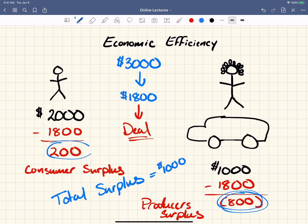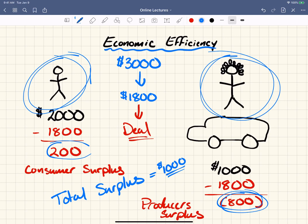The economy is $1,000 better, more or less, because both parties of the transaction got a better deal than what they would have absolutely done at the highest price that they would have bought for or the lowest price she would have sold for. And this is the idea of economic efficiency and producer and consumer surplus.